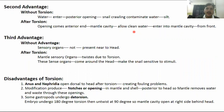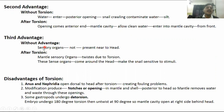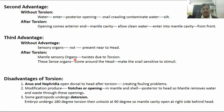Clean water in the mantle cavity is helpful for respiration because it carries dissolved oxygen. If contaminated water entered instead, the maximum lead inside the body would be harmed. The third advantage of torsion is that the sensory organs, which were not previously near the head, are twisted by torsion to become close to the head, ensuring better protection against predators and other harmful organisms.